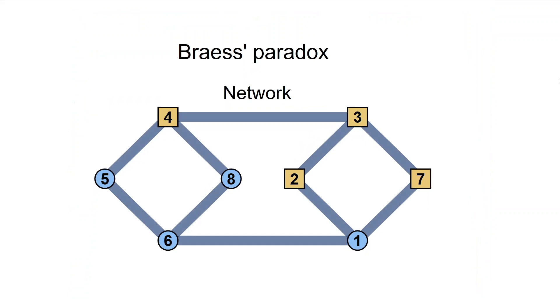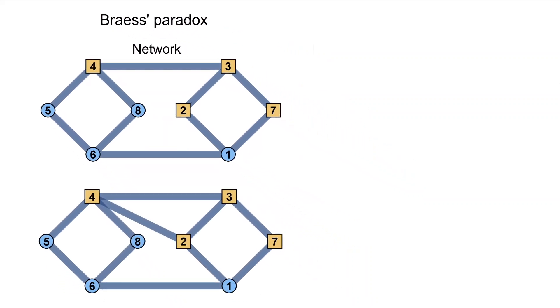Let us consider a small network, for example, a street network to transport goods or a power grid. Adding a new line to this network is intuitively expected to improve its performance by allowing additional flow within the network.